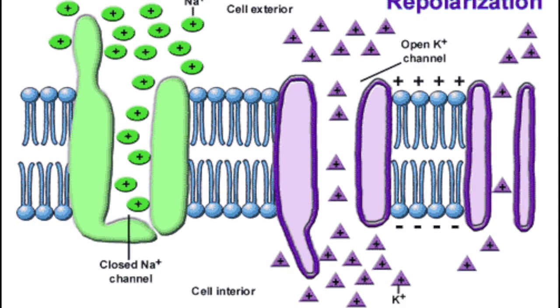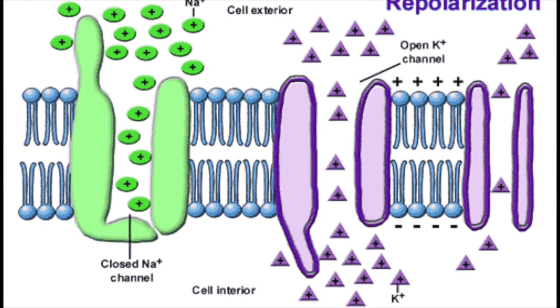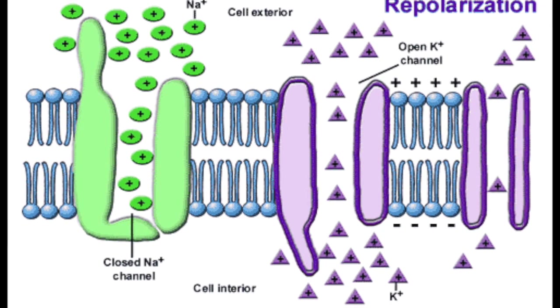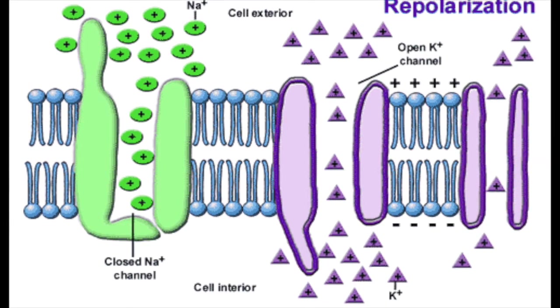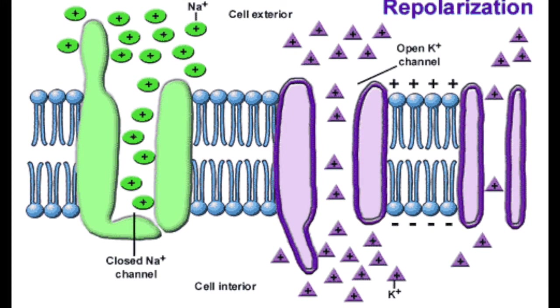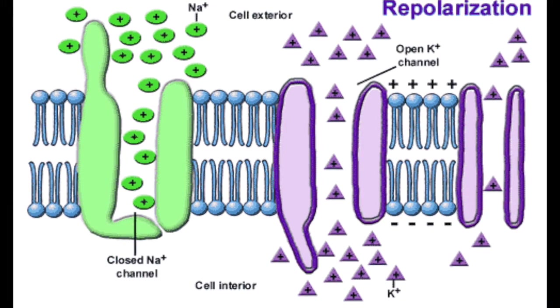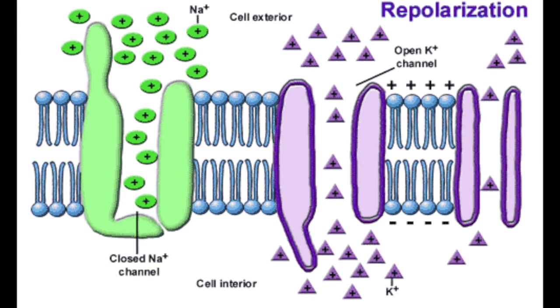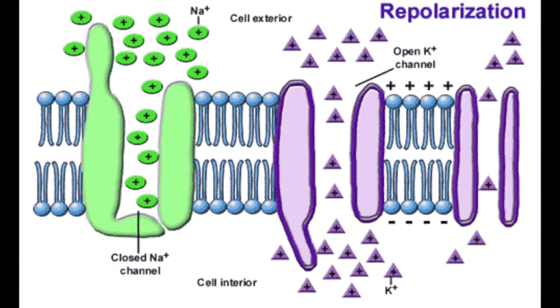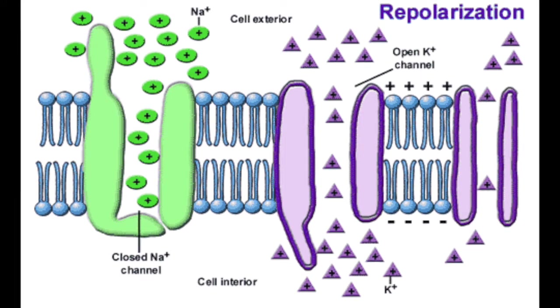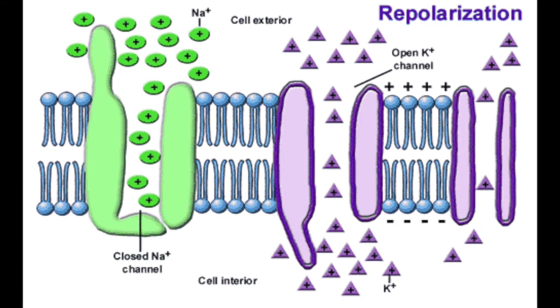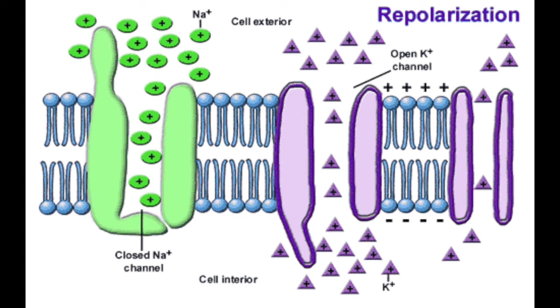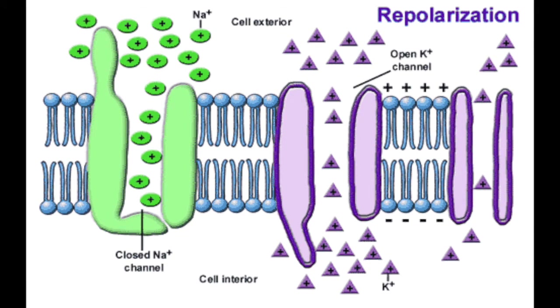Once the maximum positive change is reached, repolarization can begin. At this stage, the sodium channels are closed to prevent the flow of sodium ions into the cell. Repolarization involves returning the charge inside the cell to negative and the outside of the cell to positive. This is achieved by opening the potassium channels, allowing the potassium ions inside the cell to travel down their concentration gradient. This process is rapid and involves the movement of many ions at any one time.